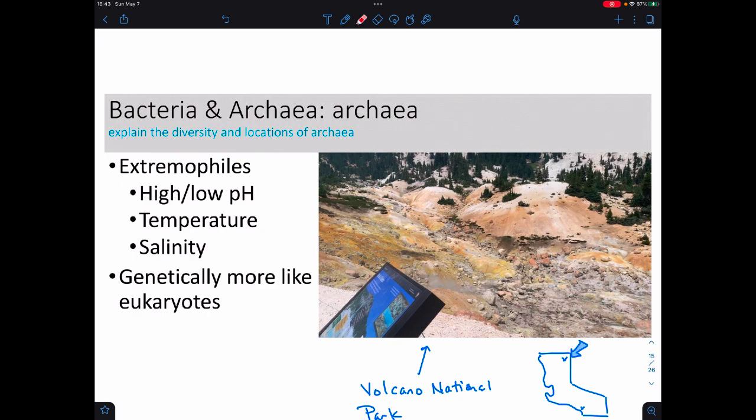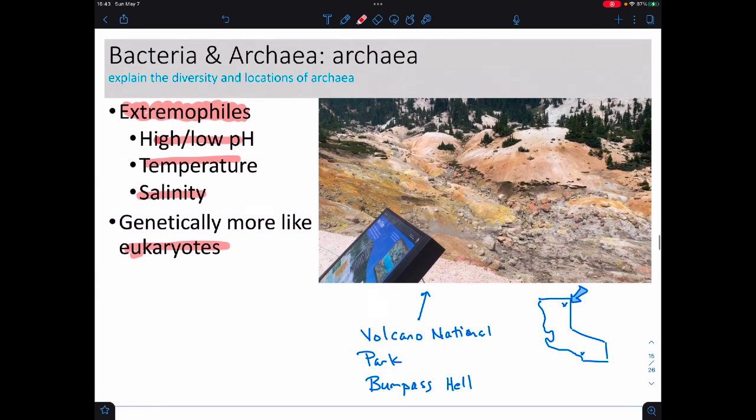The archaeans are what we refer to as extremophiles, meaning they happen to like situations that aren't as normal. So there's really high or low pH, or very high temperatures or very low temperatures, or high salinity. Genetically, they're more eukaryotic than they are prokaryotic, which is kind of fun. In class I showed this as a video that I took in 2001 of Volcano National Park. In particular, this is a section referred to as Bumpass Hell because of what it looked like. So Volcano National Park is volcanic, and now that I'm looking at my picture of California I totally have missed a good chunk of it, but I'm not going to redraw it.